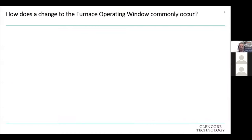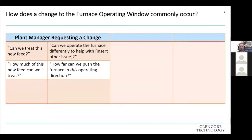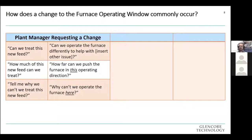Based on my experience, how do changes to the furnace operating window commonly occur? A plant manager asks: 'Can we treat this new feed?' A more assertive manager asks: 'How much of this new feed can we treat? How far can we push the furnace in a new operating direction?' And an even more assertive manager says: 'Tell me why we can't treat this new feed.' These questions influence how plant metallurgists feel obliged to respond.